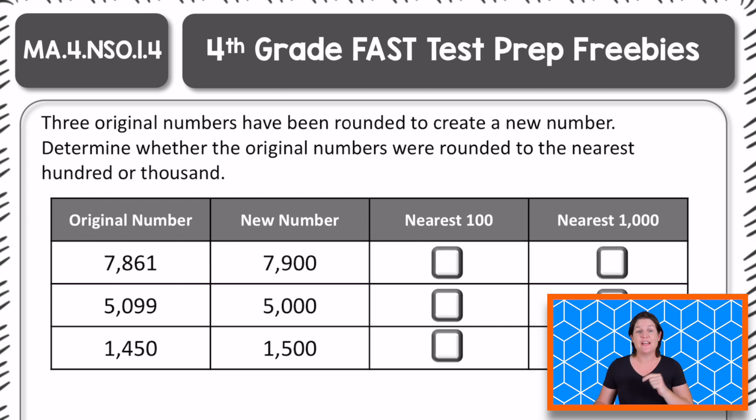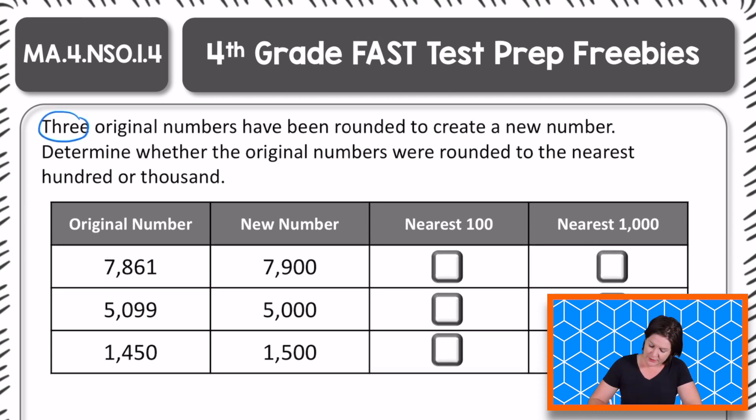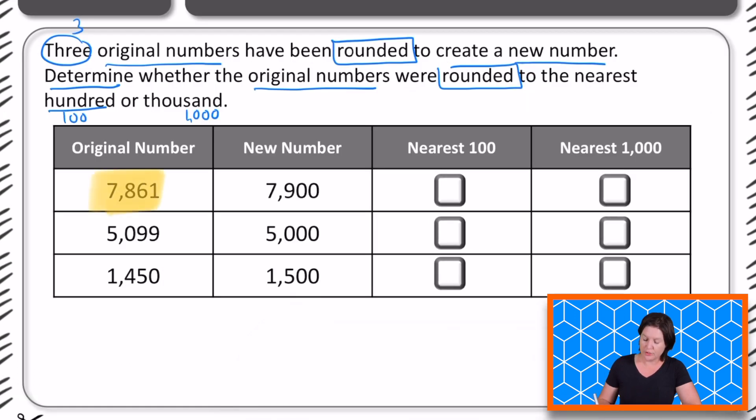All right, fourth grade, here is your fast math freebie of the week. It says that three original numbers have been rounded to create a new number. Determine whether the original numbers were rounded to the nearest hundred or to the nearest thousand. For instance, we've got an original number of 7,861. The new number is 7,900. Our mission is to figure out was that original number rounded to the nearest hundred or to the nearest thousand.